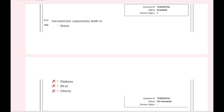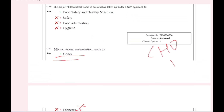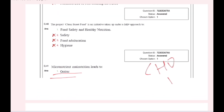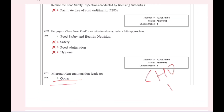Micronutrient malnutrition: micronutrients versus macronutrients like protein. Deficiencies of macronutrients — PEM is called obesity. Goiter is called malnutrition. The project is called Clean Street Food — food safety and healthy nutrition.